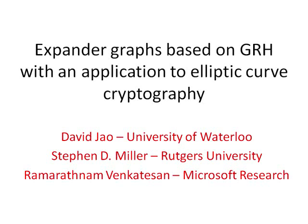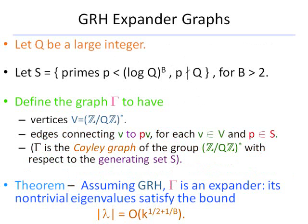We were motivated by some questions about the difficulty of the discrete log problem from cryptography, and found some applications also to expander graphs. We published a paper in the 2005 AsiaCrypt Proceedings that has more to do with the cryptography involved. This paper is more about the underlying mathematics. Here's an example of one of the graphs that our method produces. We call them GRH graphs because they rely on the generalized Riemann hypothesis to prove eigenvalue expansion.